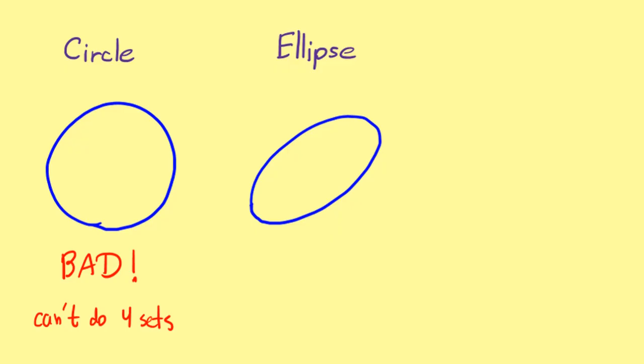So, with circles, we cannot do four sets. What about ellipses? We have seen that they can hold up to five sets, but unfortunately, they can't do six sets. This follows by the same argument we did with circles.